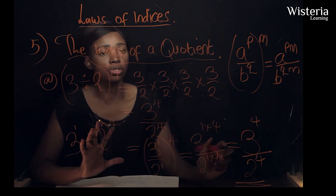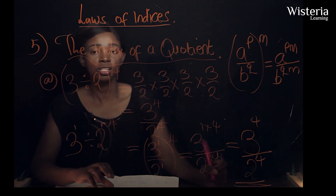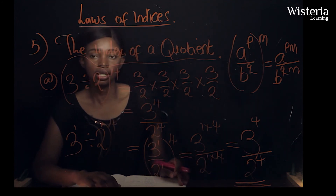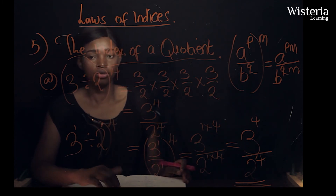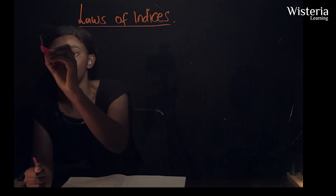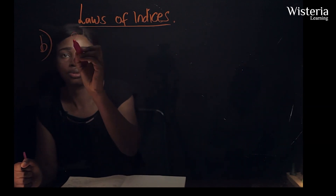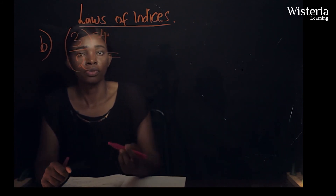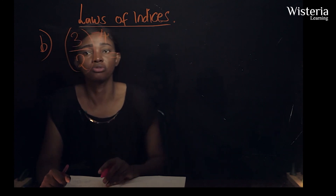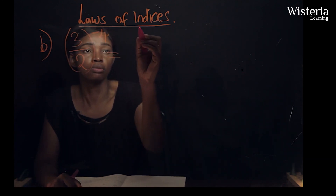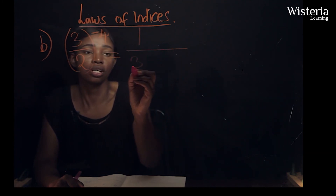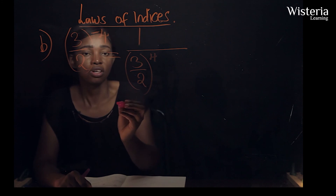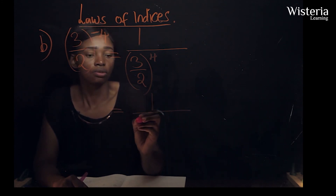Another example on the index of a quotient: three over two to the power negative four. Since the power is negative, we convert it to positive form, so it becomes one over three over two to the power four. Now our index has become positive.